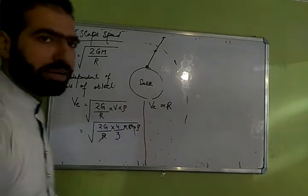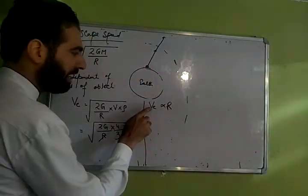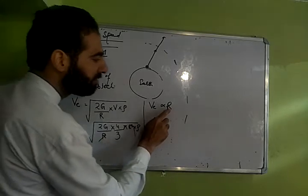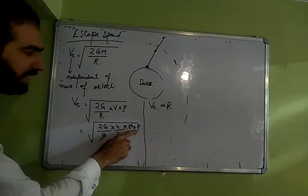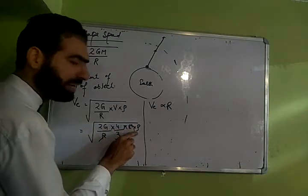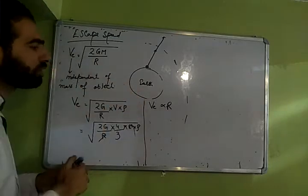Agar 2 planets ki density same hai, to kis planet peh escape speed zyada hogi, jis planet ka radius zyada hai. Yeh interms of density aata hai. Jis planet ki density zyada hogi us planet peh escape speed bhi zyada hogi.